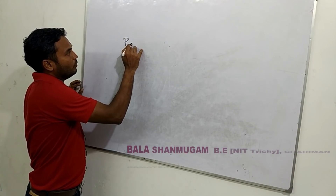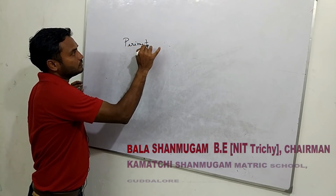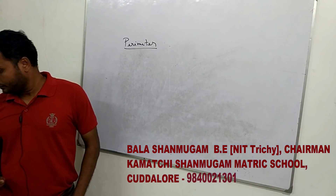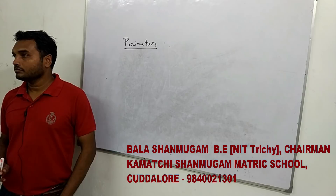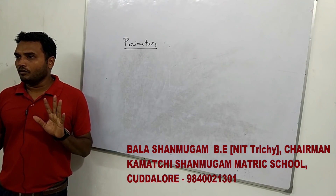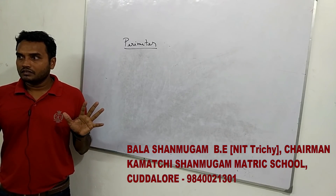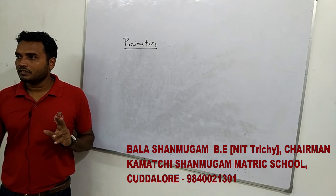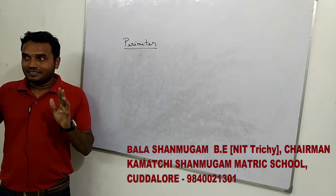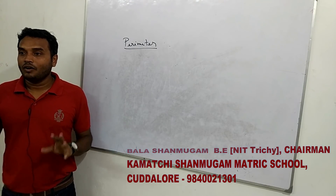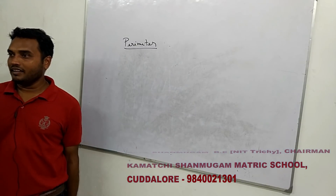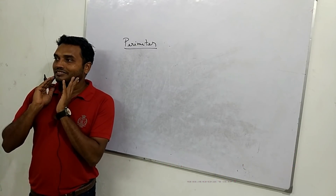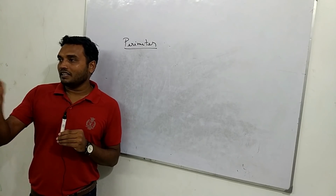I'm going to show you — how many of you know what is perimeter? Perimeter is what? The answer is: outer layer. Now the answer is clear. If your answer is clear, your understanding is clear.